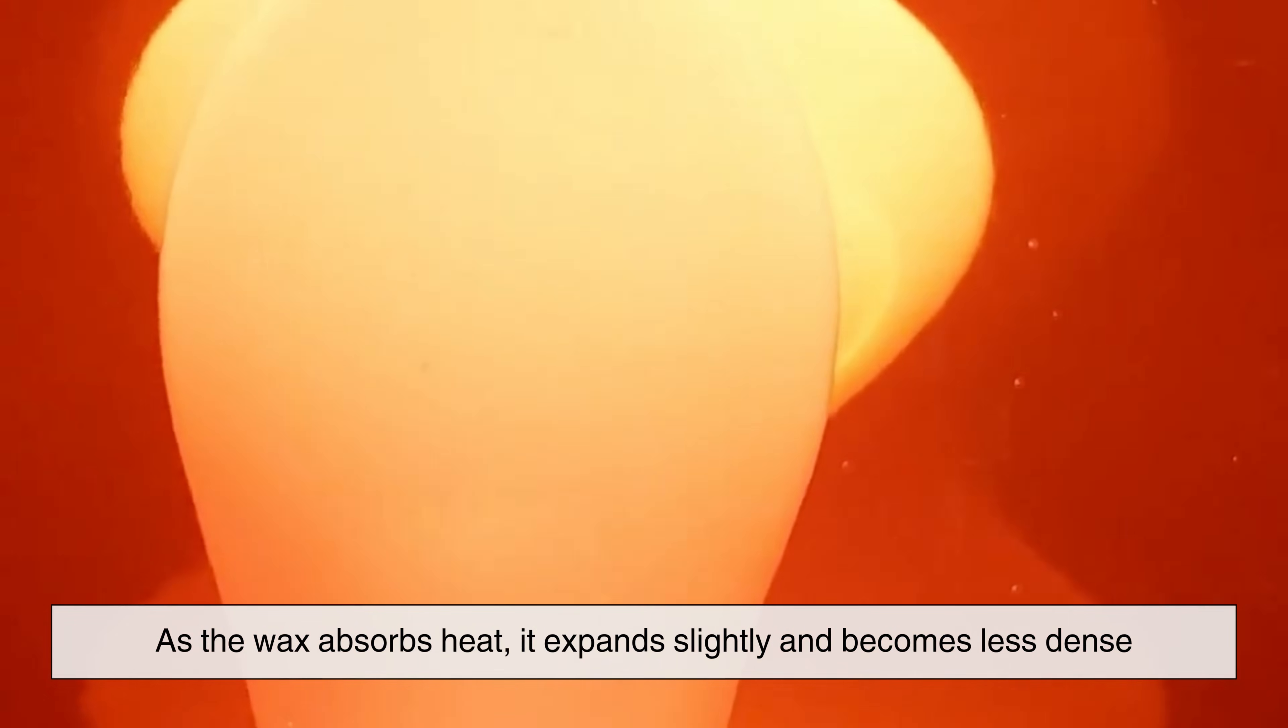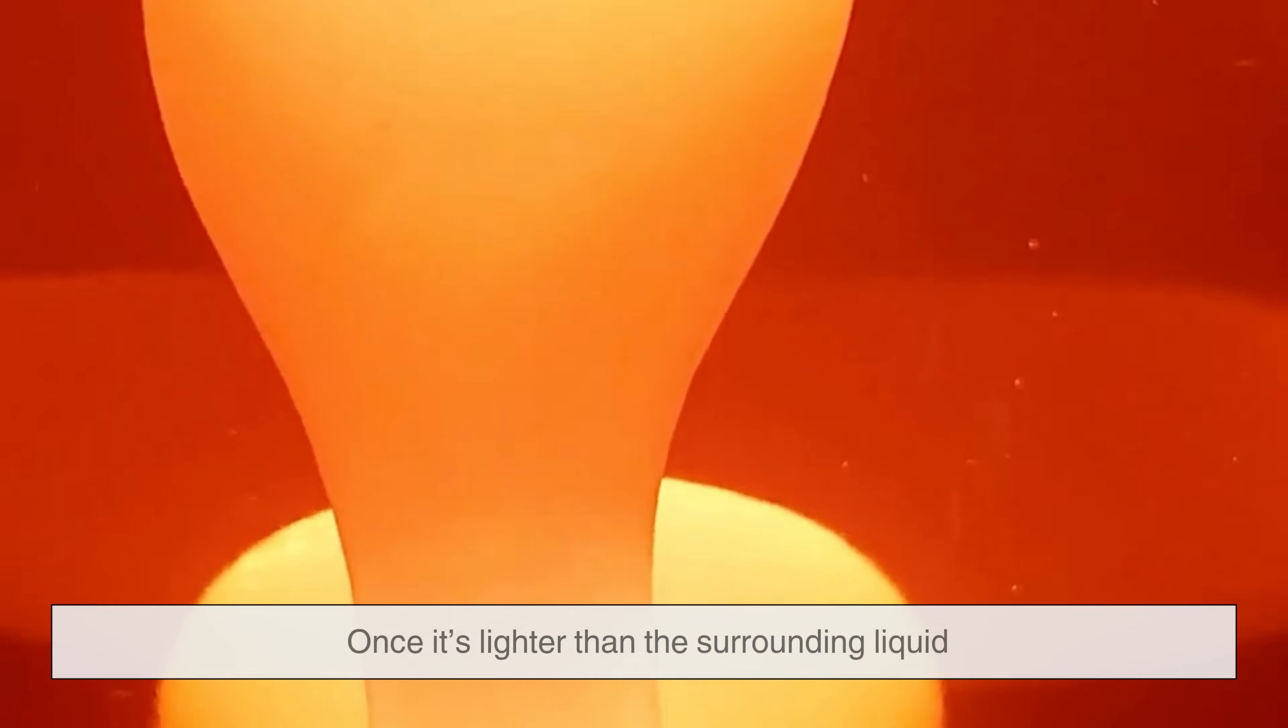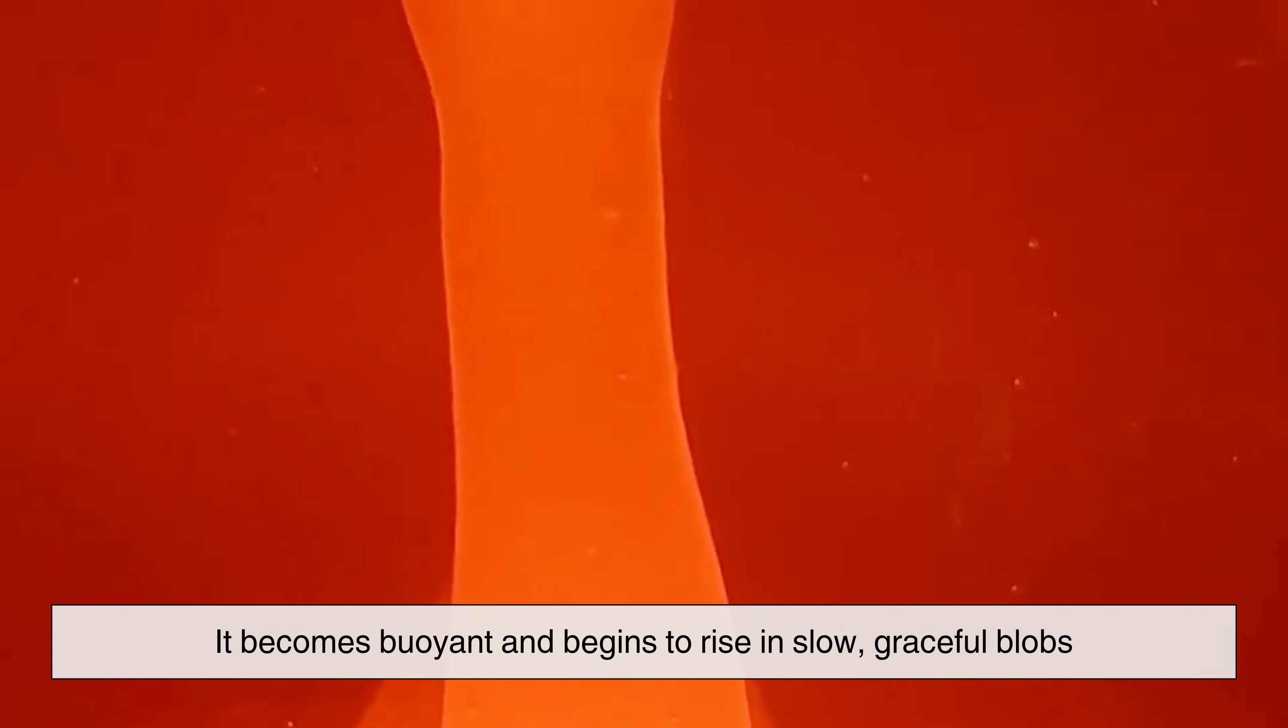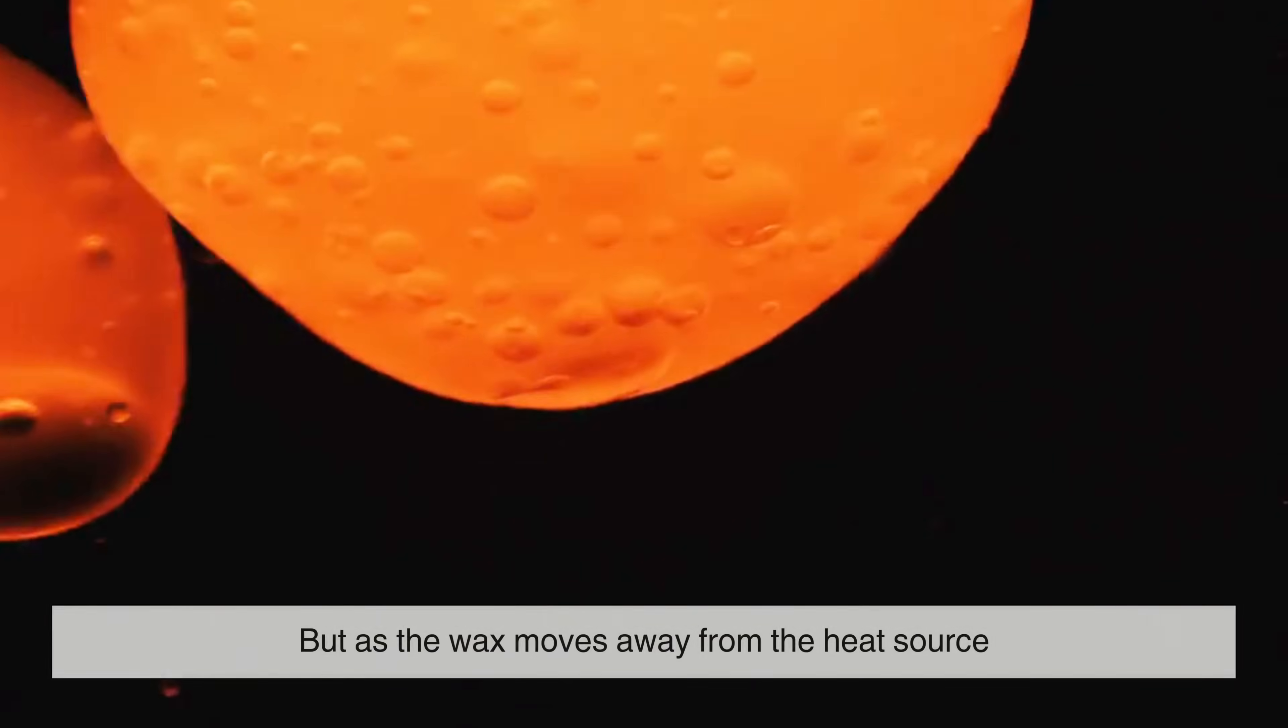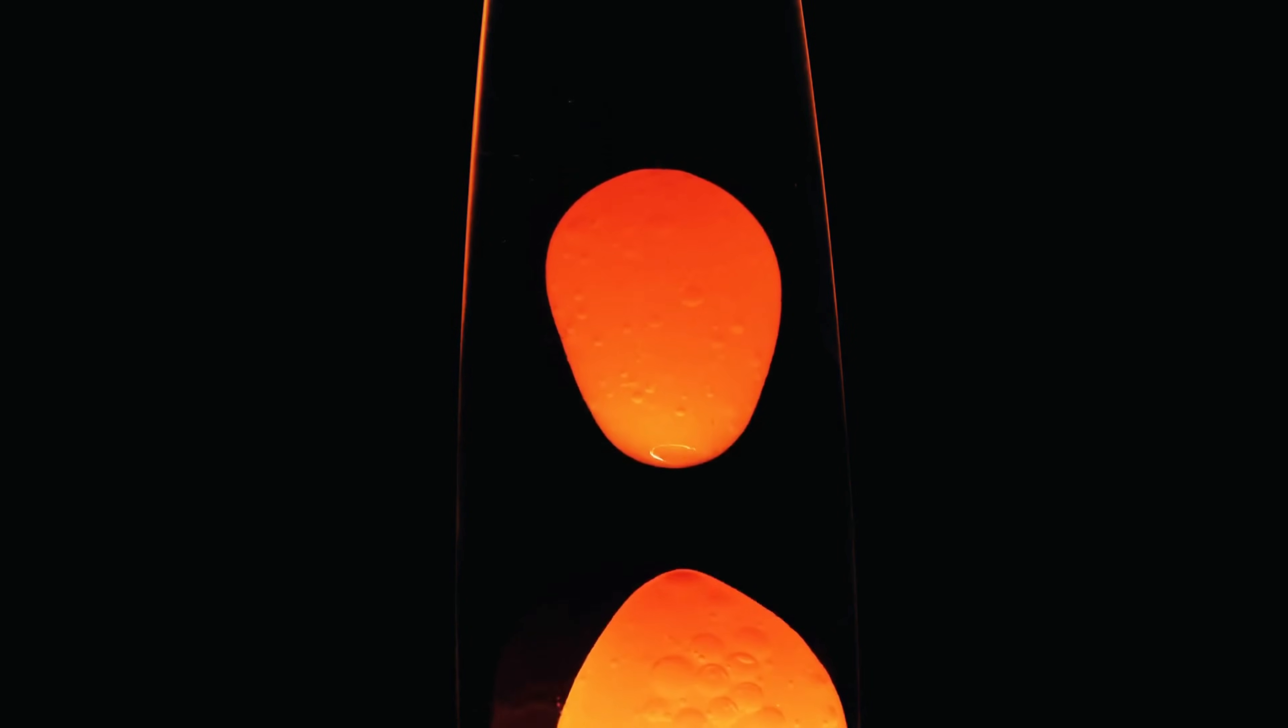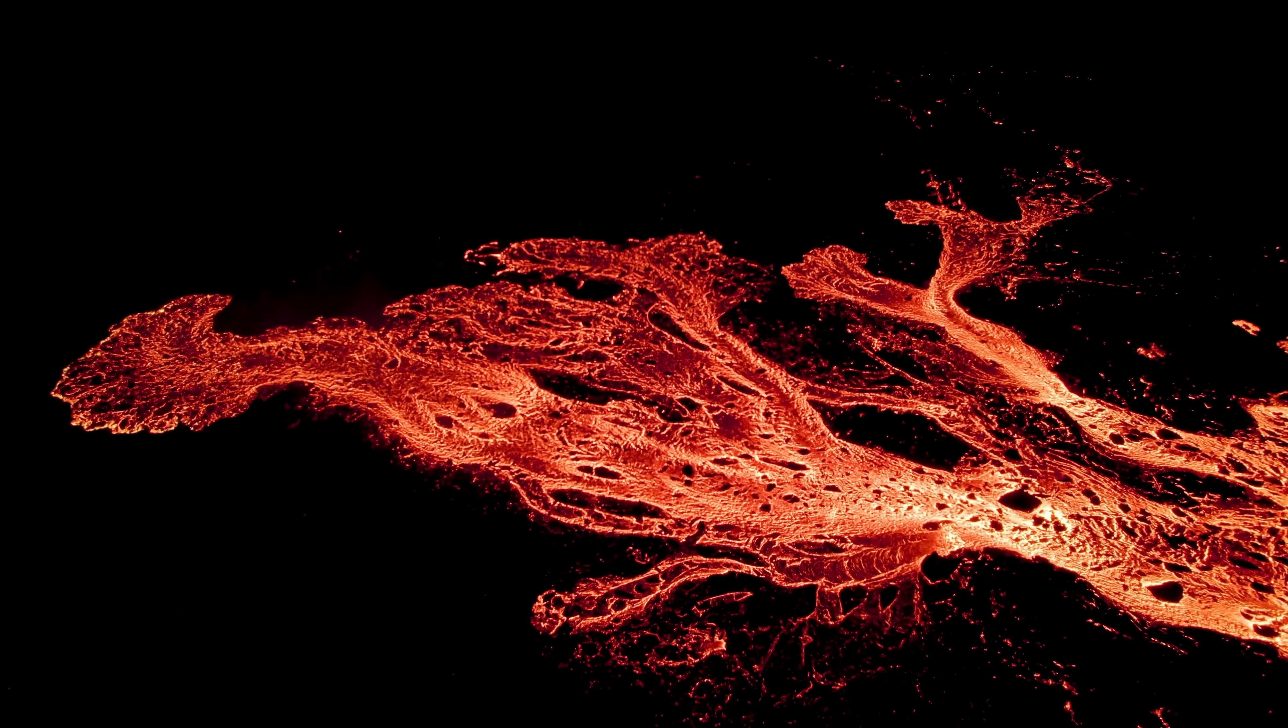As the wax absorbs heat, it expands slightly and becomes less dense. Once it's lighter than the surrounding liquid, it becomes buoyant and begins to rise in slow, graceful blobs. But as the wax moves away from the heat source, it cools, contracts, and becomes denser. Gravity pulls it back down to the base, where it reheats and the cycle begins again. This continuous loop of rising and sinking creates a mesmerizing fluid motion, like watching lava suspended in time, endlessly flowing between earth and sky.